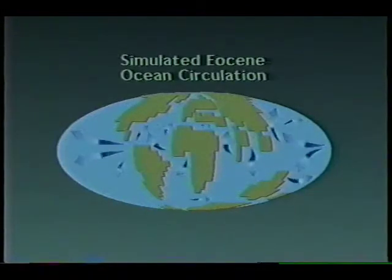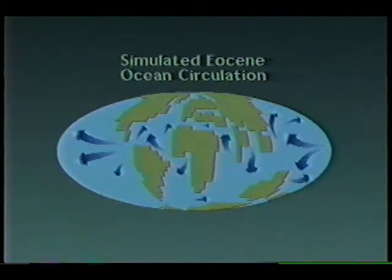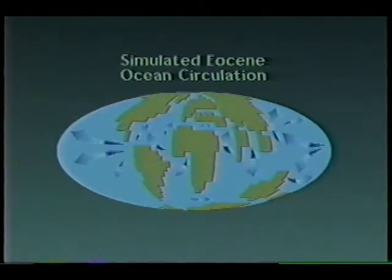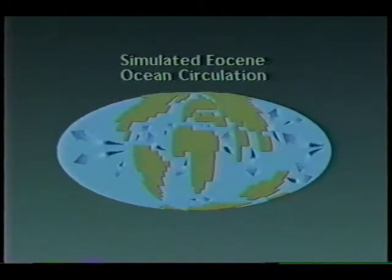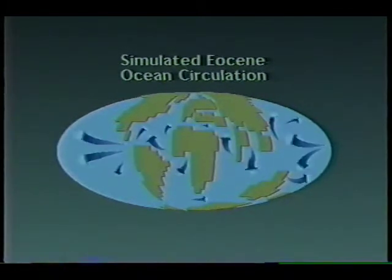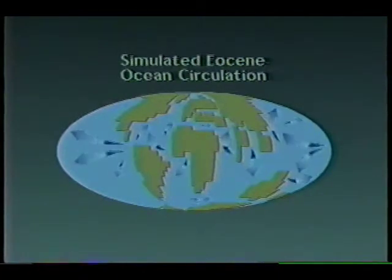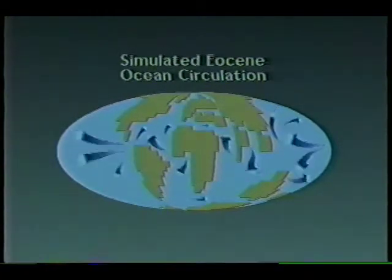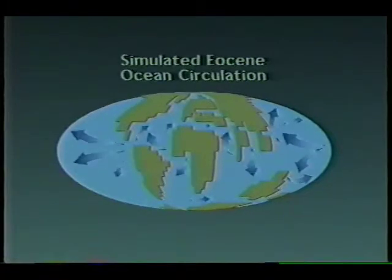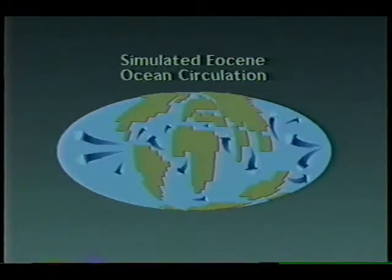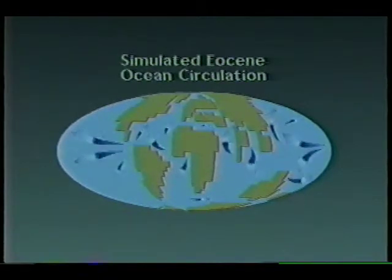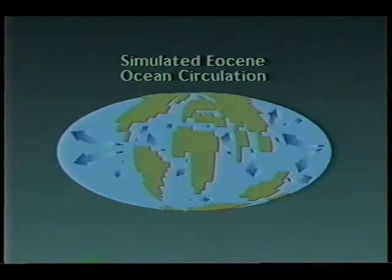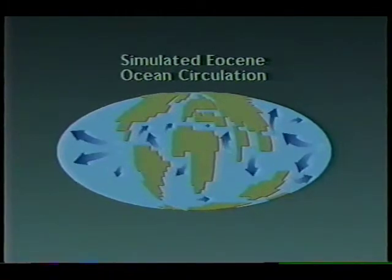Nearly everyone has seen TV weather maps that depict the flow of the jet stream with sprite symbols or color cycling. Here we use color cycling in a similar way to emphasize the directional attribute of symbols representing Eocene ocean circulation. The circulation pattern represents mean annual flow as post-dicted by a general circulation model. The apparent motion is redundant with the orientation of the flow arrows, enhancing the hierarchical structure of the graphic, but adding no new information.